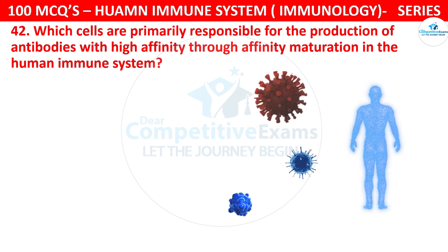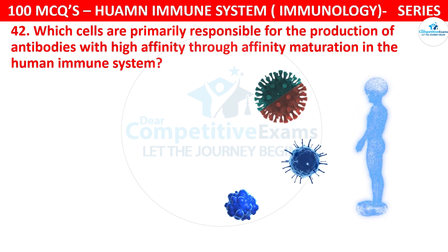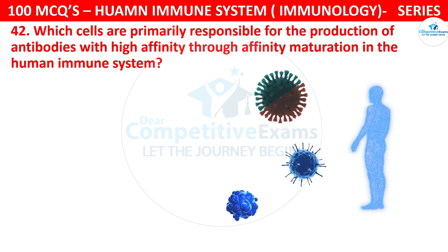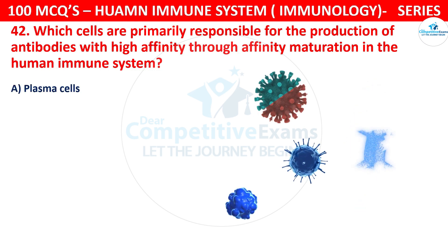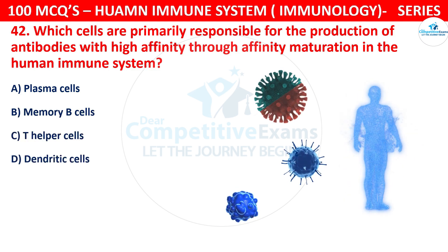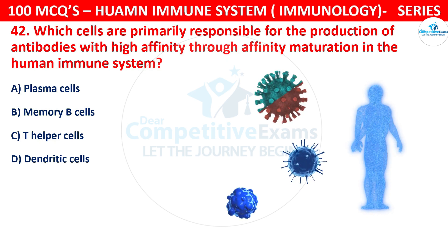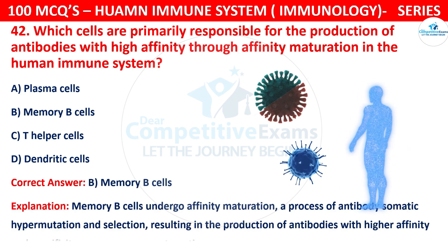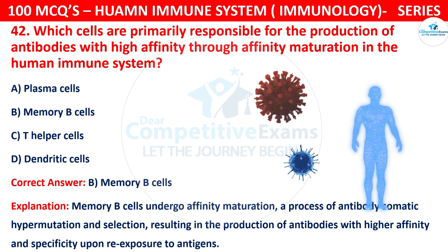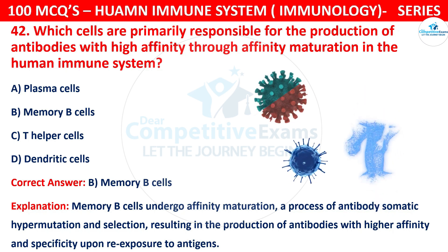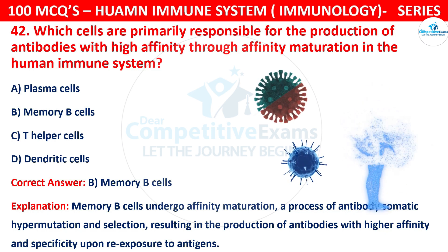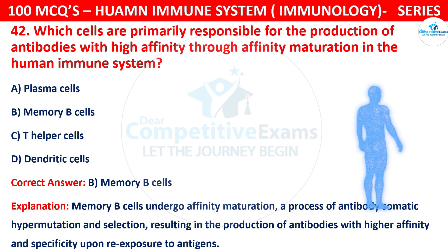Question number 42. Which cells are primarily responsible for the production of antibodies with high affinity through affinity maturation in the human immune system? The options are plasma cells, memory B cells, T helper cells, or dendritic cells. The correct answer is B, that is memory B cells. Memory B cells undergo affinity maturation — a process of antibody somatic hypermutation and selection — resulting in antibodies with higher affinity and specificity upon re-exposure to antigens.